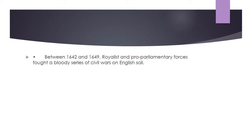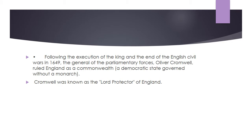Between 1642 and 1649, Royalist and pro-parliamentary forces fought a bloody series of civil wars on English soil. Following the execution of the king and end of the English civil wars in 1649, the general of the parliamentary forces, Oliver Cromwell, ruled England as a commonwealth — a democratic state governed without a monarch. Cromwell was known as the Lord Protector of England.